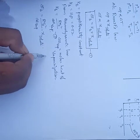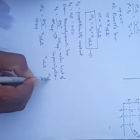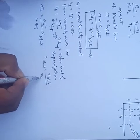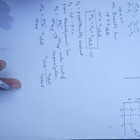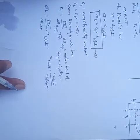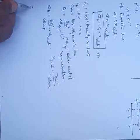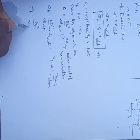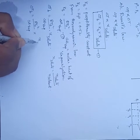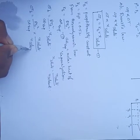The mole fraction of the solute equals number of moles of solute divided by number of moles of solvent. For dilute solutions, the number of moles of solute in the denominator is negligible. Substituting gives: delta Tb equals (R T0 squared / delta H_vap) times (number of moles of solute / number of moles of solvent).